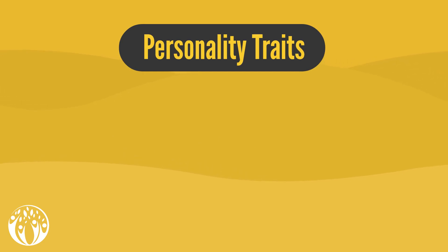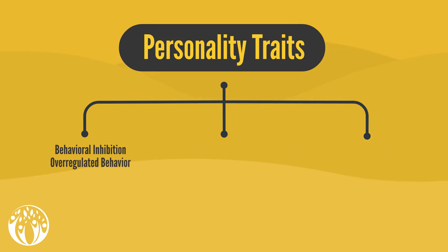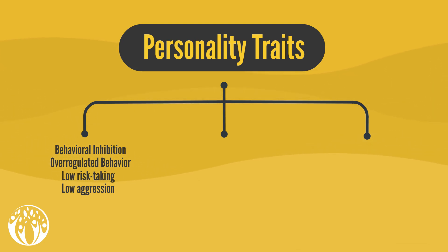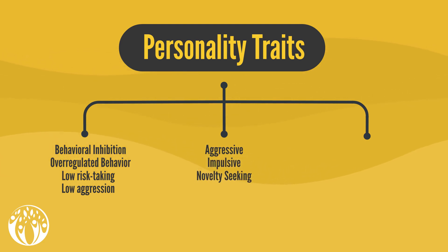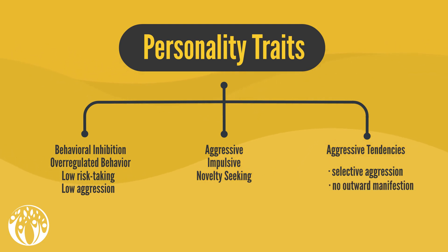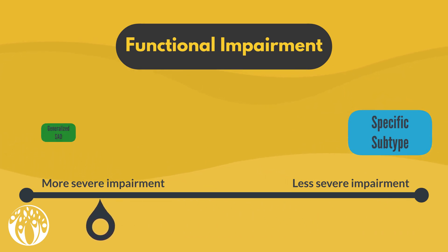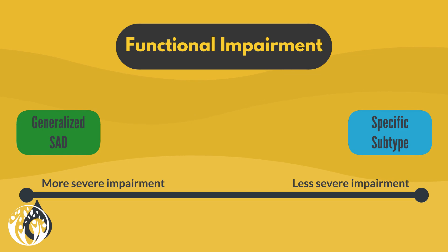When looking at the personality traits of SAD sufferers, we can find typical traits such as behavioral inhibition, over-regulated behavior, low risk-taking, and a non-aggressive profile. However, there is another fundamentally different subgroup that displays aggressive tendencies, is impulsive, and high novelty seeking. Furthermore, some findings suggest that most SAD sufferers have aggressive tendencies, which can be explained by selective aggressive behaviors toward only certain individuals such as family members, by not manifesting the aggression outwardly, or by repressing it altogether. The functional impairment tends to be less intense for individuals with the specific subtype and more intense for those suffering from generalized social anxiety disorder.